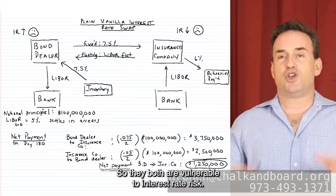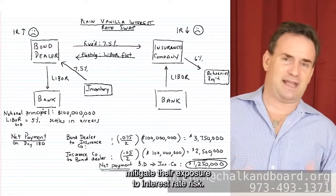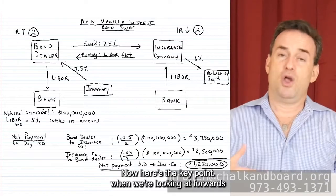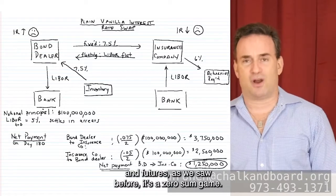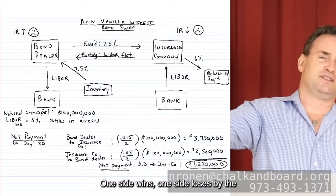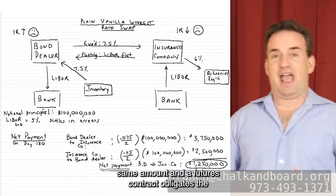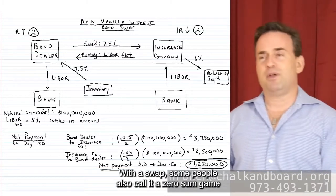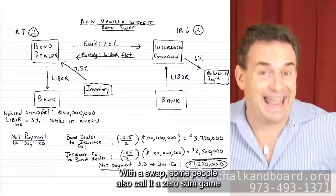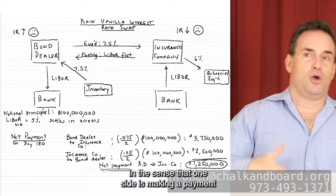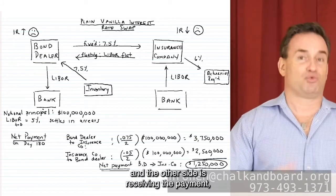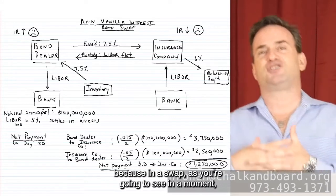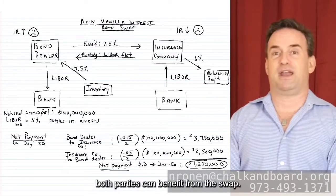Both are vulnerable to interest rate risk and would like to mitigate their exposure. Now here's the key point: with forwards and futures it's a zero-sum game — one side wins, one side loses by the same amount, and the contract obligates the parties to act. With a swap, some people also call it a zero-sum game in that one side makes a payment and the other side receives it. But it is essentially not a zero-sum game because in a swap, both parties can benefit.